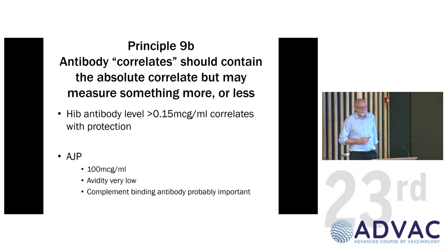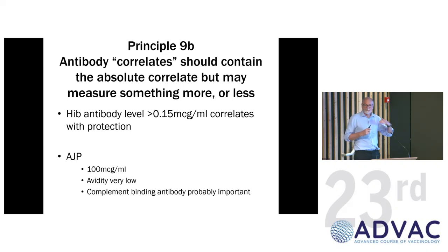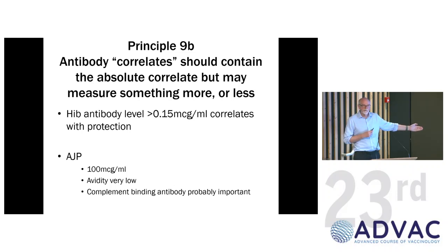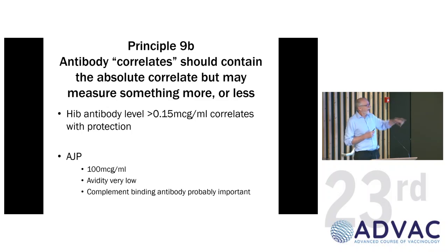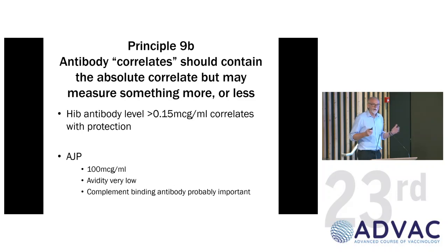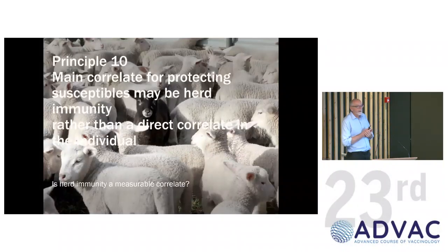It can be more complicated. The correlate of protection for Hib antibody is 0.15 micrograms per ml — a very low level required for protection. I personally have 100 micrograms per ml in my blood, but unfortunately it's incredibly low avidity antibody. You need high avidity complement-fixing antibody to protect from Hib. If you just measure Hib antibody level, as most labs do, you'd say I was protected above the correlate. But when you look with functional assays, there's no protection.